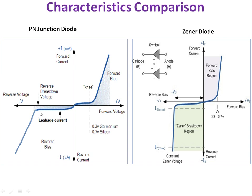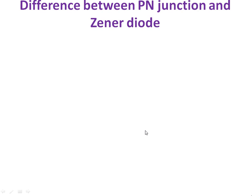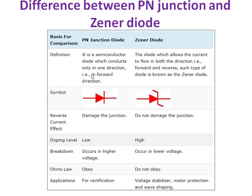Now the difference between PN junction diode and Zener diode: a PN junction diode conducts in only one direction, because in reverse bias the current is almost zero. But a Zener diode conducts current in both directions — forward and reverse bias. In a PN junction, once the voltage reaches the breakdown voltage, the diode will be damaged. But in a Zener diode, it is not damaged. The doping level in a PN junction is low, whereas in a Zener diode it is high. Breakdown in a PN junction occurs at very high voltage, but in a Zener diode it occurs at lower voltage. A PN junction obeys Ohm's law in linear condition, but a Zener diode does not. The PN junction is mainly used for rectification, while the Zener diode is mainly used as a voltage stabilizer.